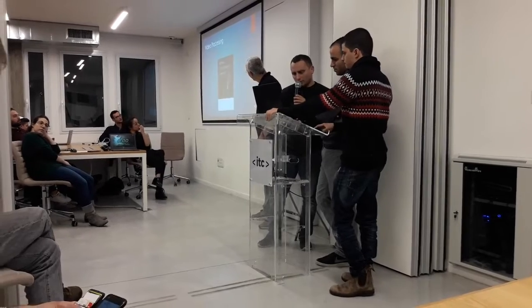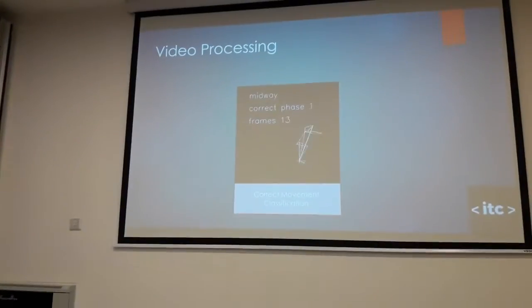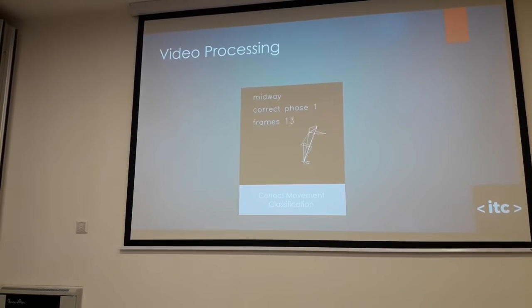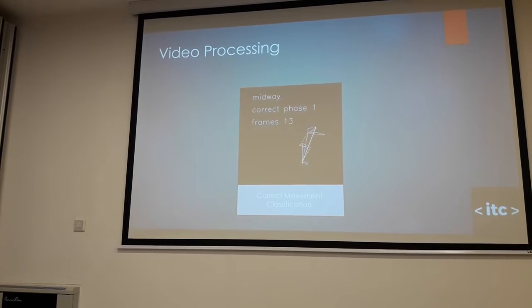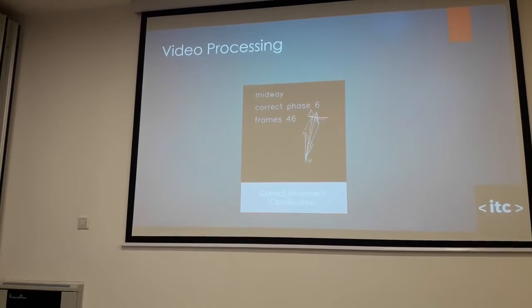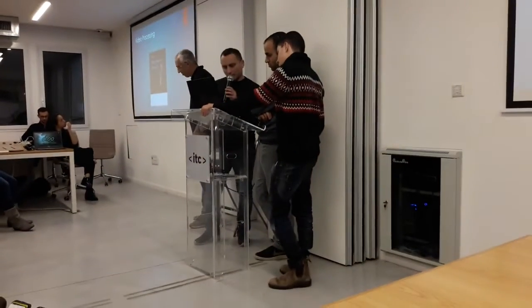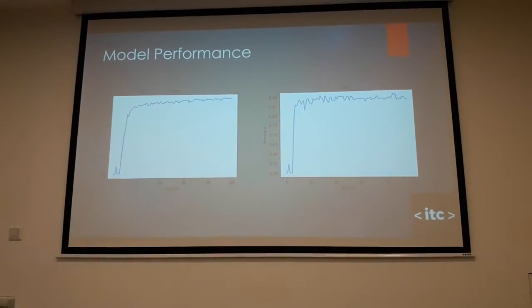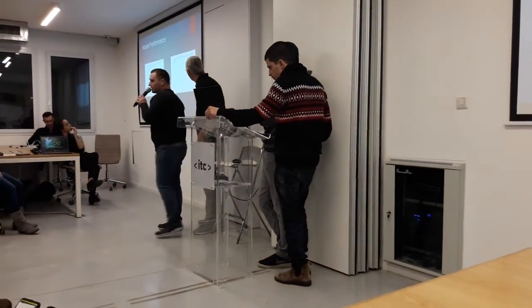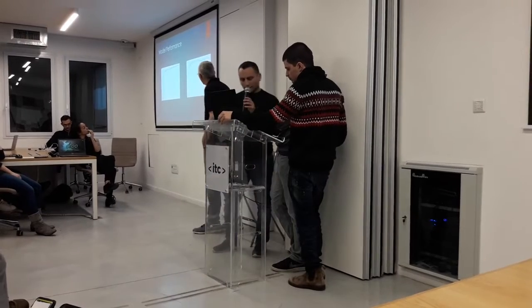After normalization, we trained two models: a neural net and logistic regression — they performed more or less the same. Here you can see the squat being counted. It's counting twice: once for the movement down if correct, and once for the movement up. At the top we classify the actual movement. We reached around 90% accuracy very quickly, and we think we could do much better if we didn't limit ourselves on the angles.